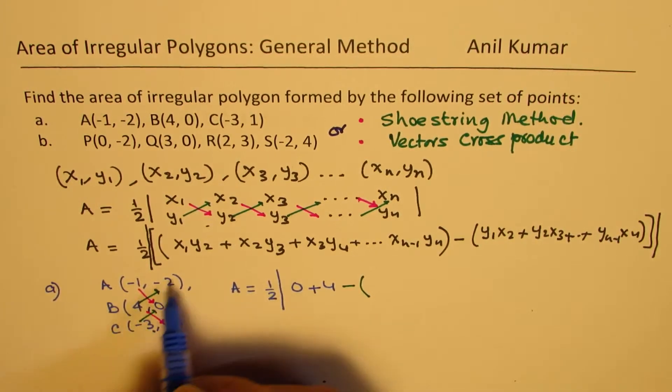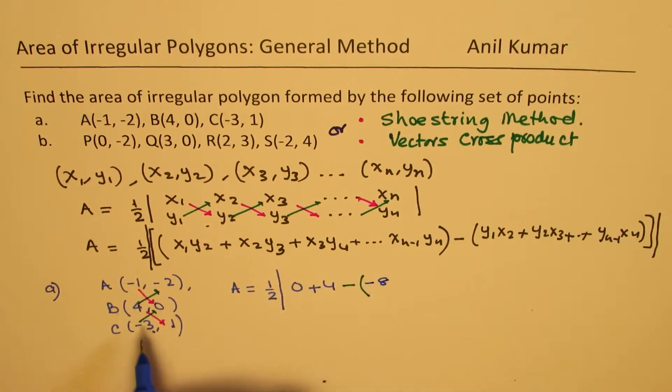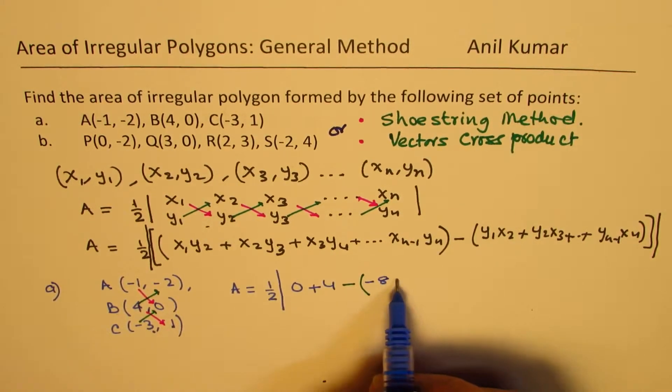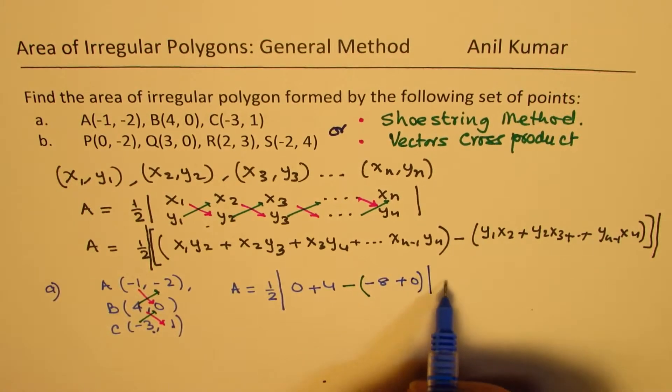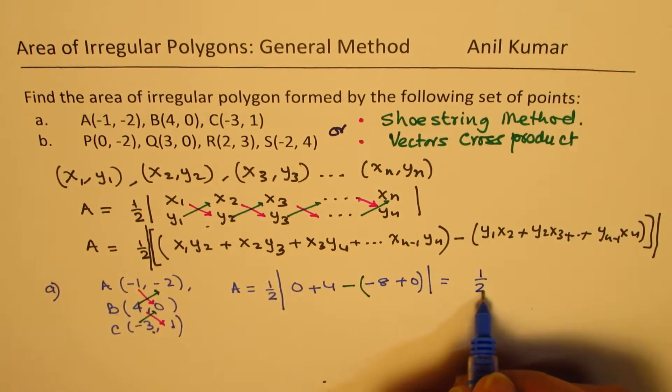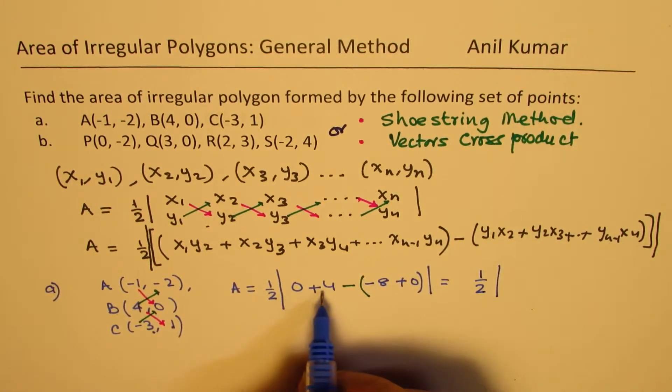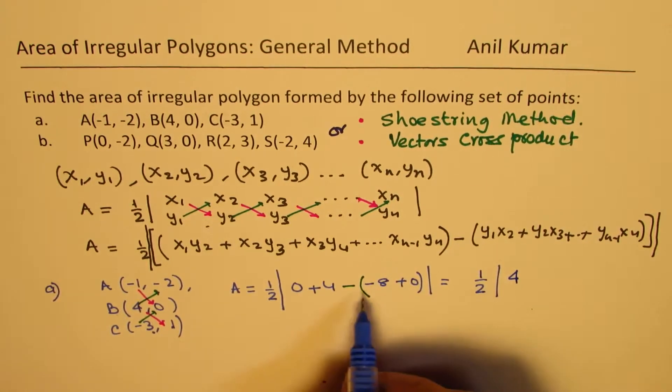Now, if you do 4 times minus 2, it becomes minus 8, and if you do minus 3 times 0, you get plus 0. It is absolute value of half of 0 plus 4 is just 4.